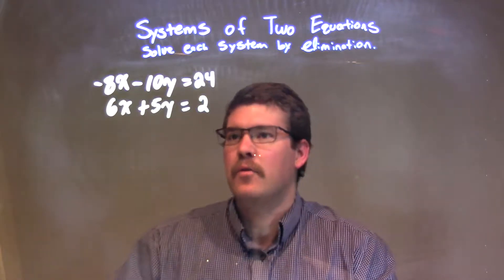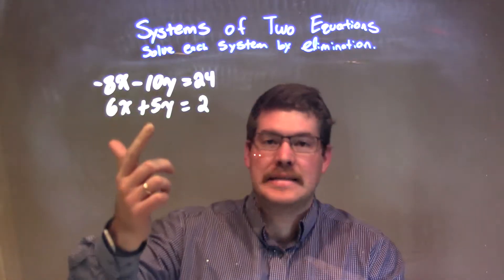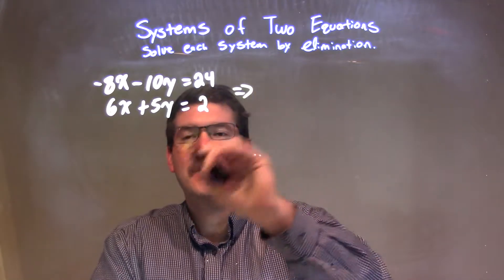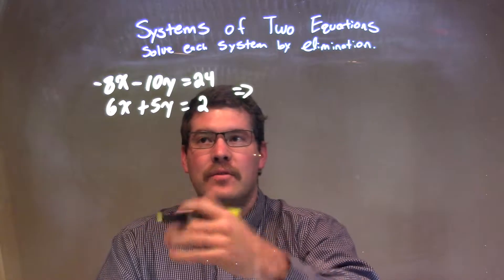Well, I can easily identify that 2 times 5 is my 10, and since I had a negative 10 at the top, that's all we need to do. So, all I'm going to take now is my second equation and multiply it all by a positive 2.